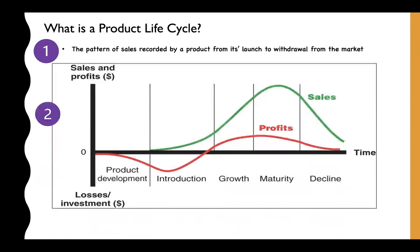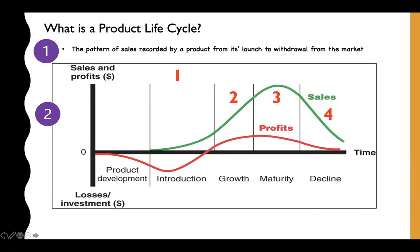This diagram is probably familiar to you. There are four stages: the first is introduction, the second is growth, the third is maturity, and the fourth is decline. Note that the product development stage is recorded at stage zero, because this is where the product is being developed. At this point, the red line goes down, showing that sales and profits are recorded below normal, because you are spending more money developing the product.